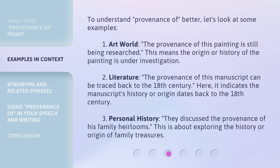Second, in literature: 'The provenance of this manuscript can be traced back to the 18th century.' Here it indicates the manuscript's history or origin dates back to the 18th century. Third, personal history: 'They discussed the provenance of his family heirlooms' — this is about exploring the history or origin of family treasures.